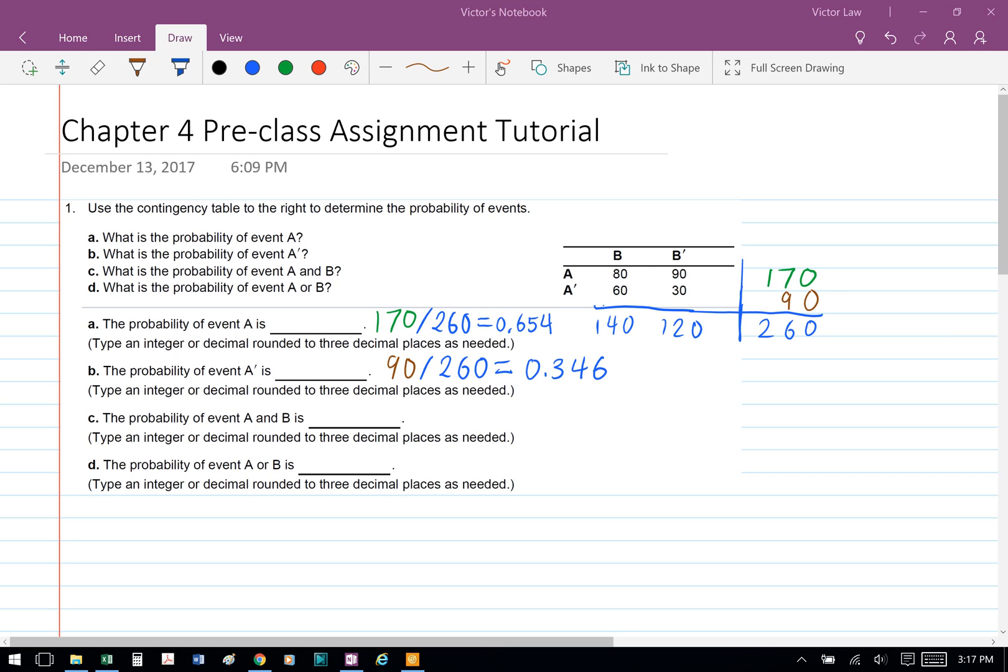For part B, the probability of event A' is the total of event A', which is 90 divided by 260, which equals 0.346.